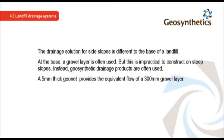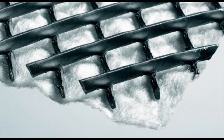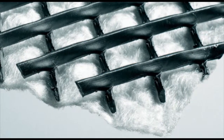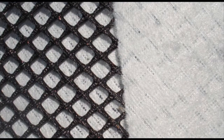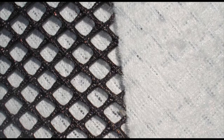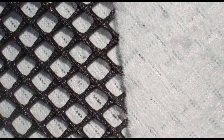A 5mm thick geonet provides the equivalent flow of a 300mm gravel layer. This close-up of a geonet shows how the two strands of synthetic net form a cavity to allow the flow of liquid. Two layers of geotextile may be used; they are bonded to the net and must not be allowed to intrude into the cavity and inhibit the drainage flow.